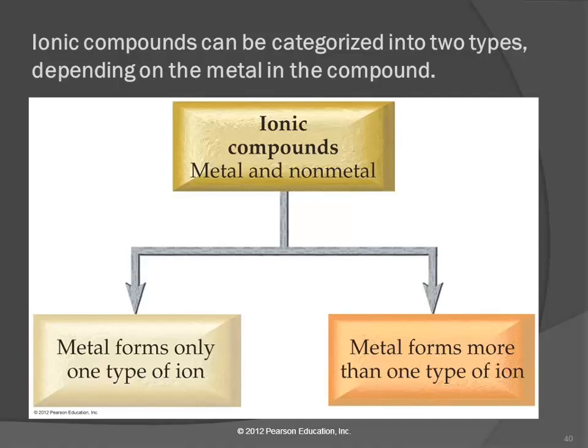Ionic compounds are divided into two groups. The first group is compounds where the metal forms only one type of ion, and those are the ones we've talked about, group 1A, 2A, 3A. The charge on that ion is the same as the group number. There are also some other ones that form more than one type of ion, and these are pretty much the transition metals. We can't predict their charge from the periodic table.